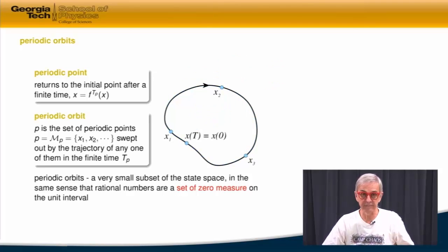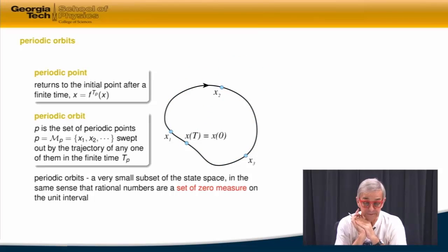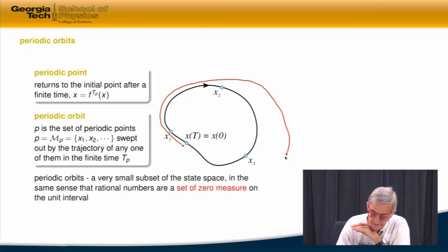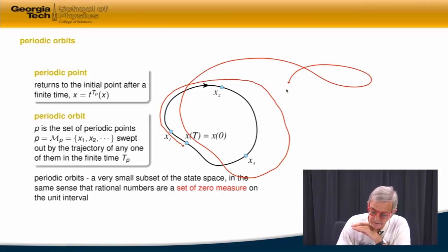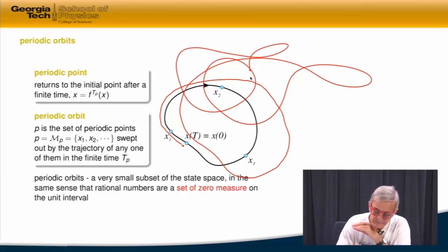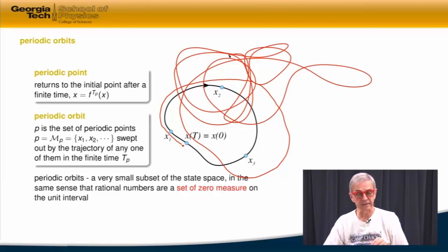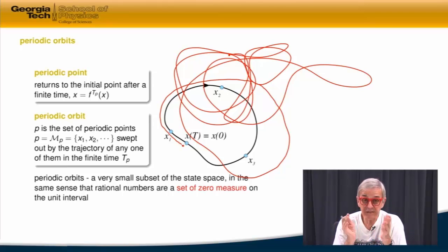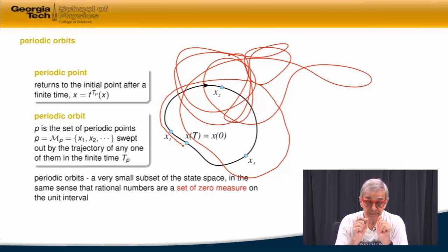There is a problem with periodic orbits. If I start just a little bit off, then what I'll discover is that for a while I'll behave like the flow — because the flow is smooth — but then I'll run away and do something totally different and complicated. That will be a typical situation. So these periodic orbits are exactly recurrent, but they're very fragile. They're zero measure in the state space — just very special points that return.